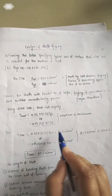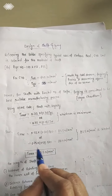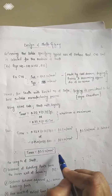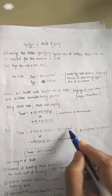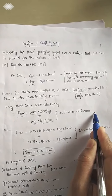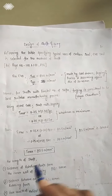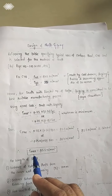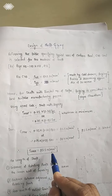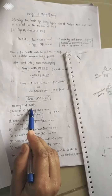Substituting the values of Syt and Sut into the equations, we get tau_max = 85.5 N/mm² or tau_max = 86.4 N/mm². We take the minimum value, so the maximum principal shear stress is selected as tau_max = 85.5 N/mm².